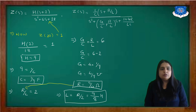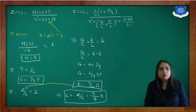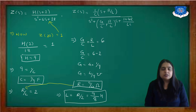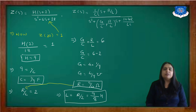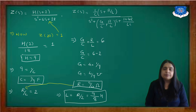Substituting to find the inductor value: from R/L=2 and R=9/4, L = (9/4)/2 = 9/8 henries. This type of example can be asked for 4–7 marks. Alternatively, a circuit diagram may be given and you must find the transfer function and plot poles and zeros on the s-plane, which can be asked for 4 marks.